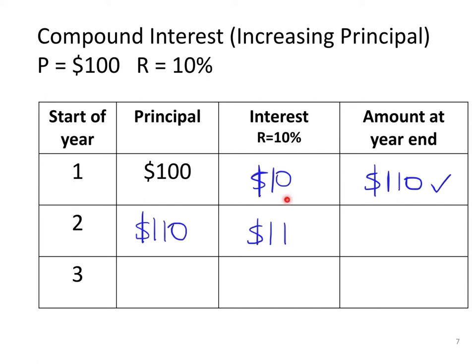This extra $1 comes from the interest on the interest of the first year. Since the interest in the first year is $10, that $10 itself earns interest: $10 times 10% equals $1. This is the interest of the interest from the first year — in Chinese, this concept has a special name for this additional amount.